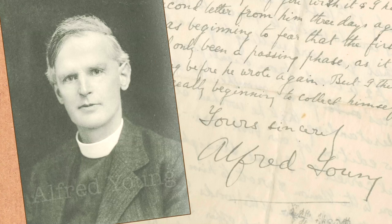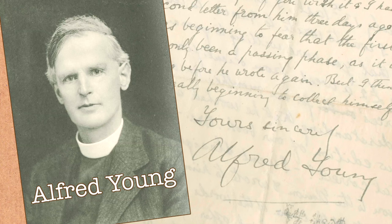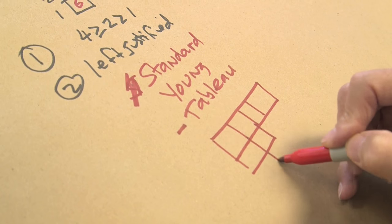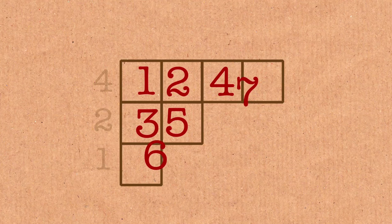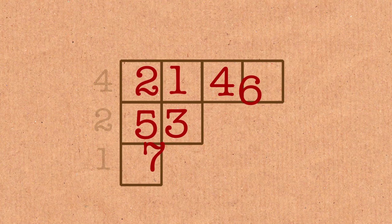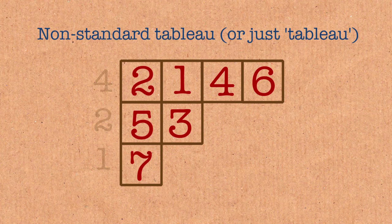This is called a standard young tableau. Young is a person. While I'm at it, the word tableau simply means an arrangement of numbers in a shape with no rules satisfying them. For example, I can just do an example of a tableau that's not a standard young tableau. I'll put the 1 here and the 2 here and the 3 here and the 4 here and the 5 and the 6 and the 7. So these numbers are not increasing along rows and increasing down columns. So that's just called a tableau.